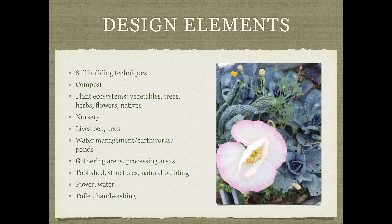Having a nursery is helpful if you can start your own seeds and produce your own seedlings — that supports the productivity of your farm overall. If you want livestock, think about what structures they might need. If you want bees, think about where to place them. It's basically a laundry list of different elements you might want to place on your garden map.